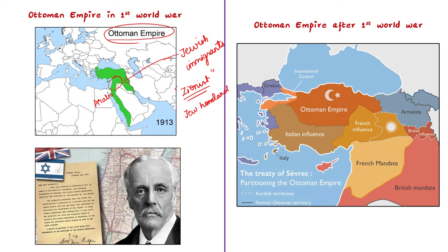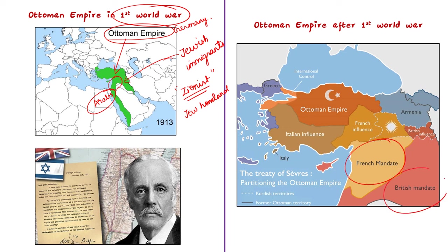During World War I, the Palestine region was under the Ottoman Turkish Empire. This Ottoman Empire fought alongside Germany in the First World War. Since they lost the war, Britain and France took over the Turkish Empire and divided the empire's land among themselves. The area of Palestine came under the control of Britain.